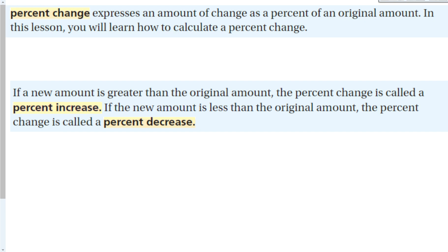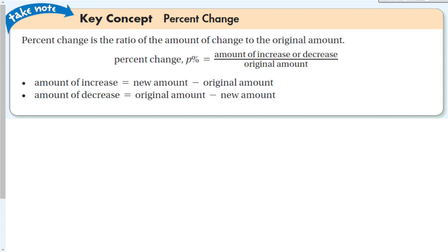If a new amount is greater than the original amount, the percent change is called a percent increase. If the new amount is less than the original amount, the percent change is called a percent decrease. The formula is: percent change (P) equals the amount of the increase or decrease divided by the original amount. This ratio gives us a decimal, which we convert to a percentage by multiplying by 100 — moving the decimal two spots to the right.